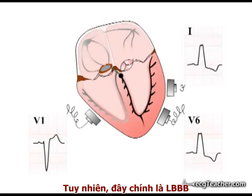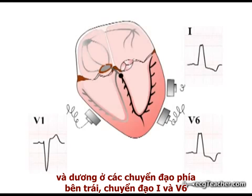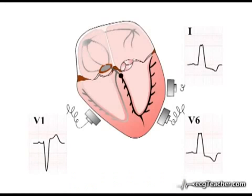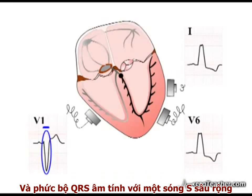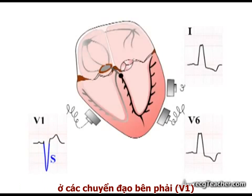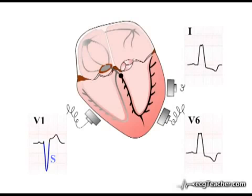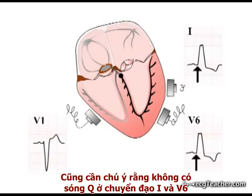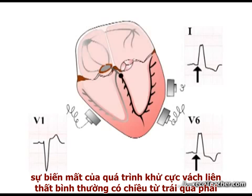However, this is left bundle branch block, as the QRS complex is broad and predominantly positive in the left-sided leads, leads 1 and V6. An overall negative QRS complex with a deep, wide S wave in the right-sided chest lead V1 is also consistent with the diagnosis. Note also there are no Q waves in leads 1 and V6, which is consistent with loss of the normal early left-to-right depolarisation of the septum.